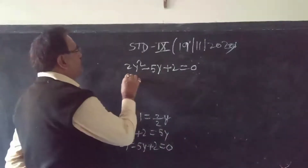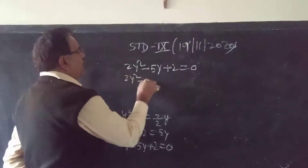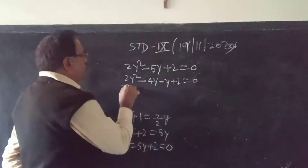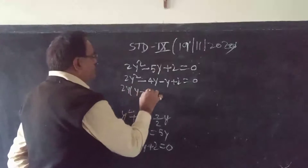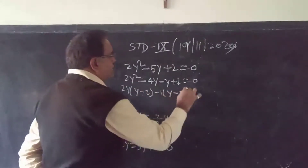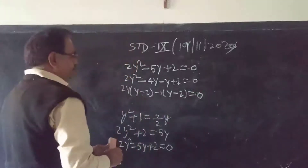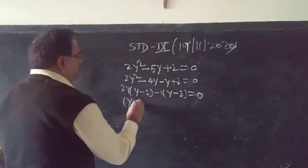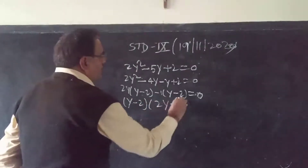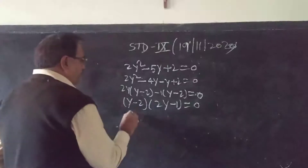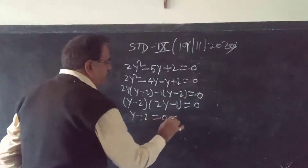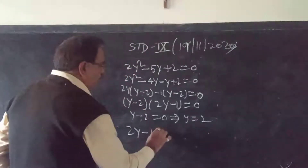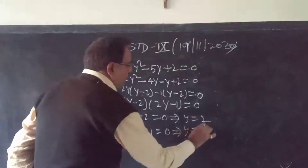To factor this, we split the middle term: 2y² − 4y − y + 2 = 0. So on the board we get (y − 2)(2y − 1) = 0. Therefore y − 2 = 0 gives y = 2, and 2y − 1 = 0 gives y = 1/2.